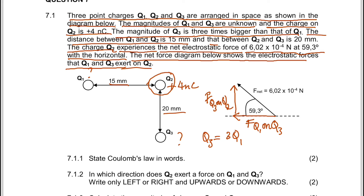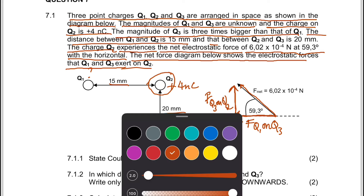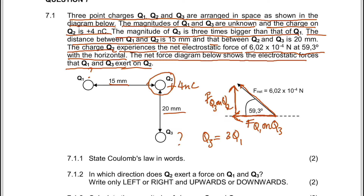If you draw the horizontal force first and then the vertical force consecutively, your resultant will start from the tail of the first vector to the head of the last vector. Alternatively, you can draw the vertical force of Q2.3 on Q2.2 upward and then the horizontal force alongside it — either approach gives the same resultant.